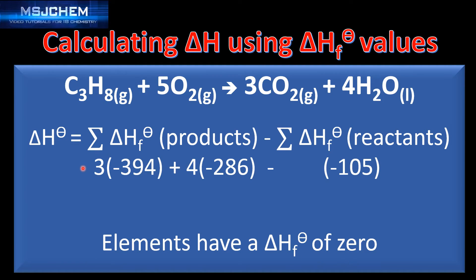Let's put the values from table 12 into the equation. Starting with CO2, the standard enthalpy change of formation value is negative 394 kilojoules per mole. I multiply this value by three because the coefficient in front of the carbon dioxide is three.